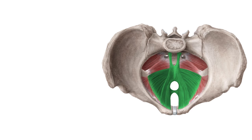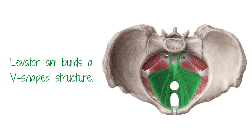As a whole, the levator ani builds a V-shaped structure. Both levator arms limit a triangle opening which is divided by pre-rectal fibers into the urogenital hiatus and anal hiatus. The urogenital hiatus is the pathway for the urethra and, in women, the vagina. The rectum runs through the anal hiatus.